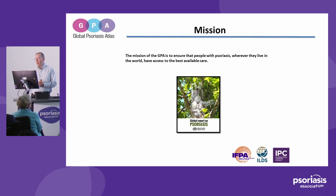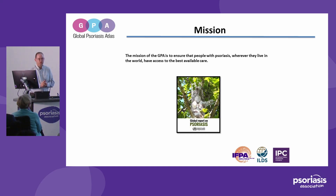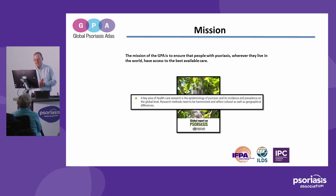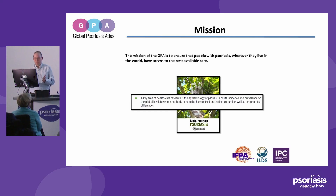The Global Psoriasis Atlas was set up in 2017 to address some of the calls for action that came out from the reports on psoriasis from the World Health Organisation. In particular, a call that focused on really improving our understanding of the epidemiology of psoriasis — specifically the incidence and prevalence at a global level — and talking about how we've got to harmonise some of our research methods to better understand this.